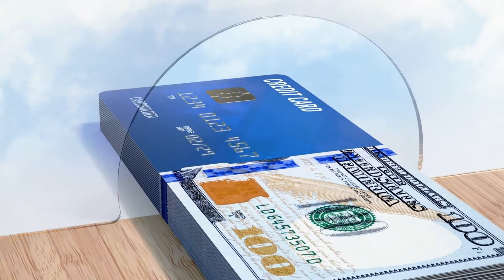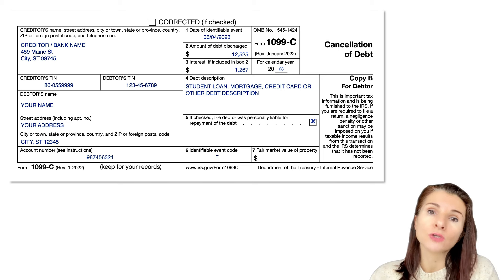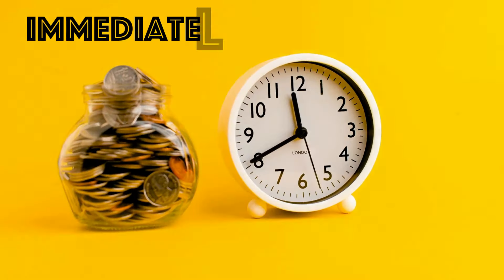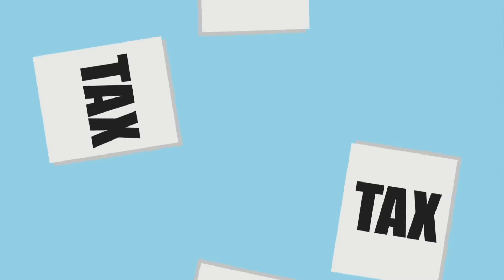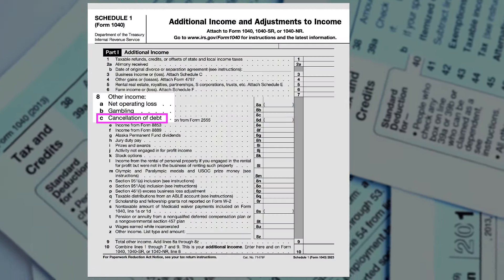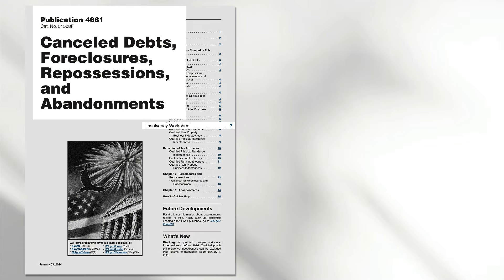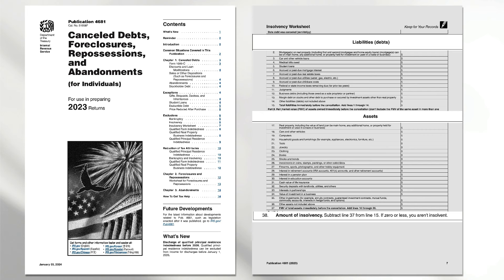Cancellation of credit card debt: if the taxpayer receives Form 1099-C for cancelled credit card debt and was solvent — meaning assets were greater than liabilities — immediately before the debt was cancelled, all the cancelled debt will be included on the tax return as other income on Schedule 1. To determine solvency, the IRS has an insolvency worksheet in IRS Publication 4681.